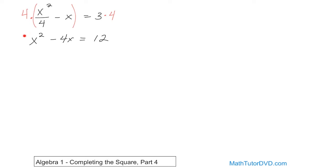Now we have a coefficient of 1 here. We check for any constant terms on the left — there are none, all constants are on the right, just the number 12. So we continue with our procedure: negative 4 divided by 2, square the result. Negative 2 squared gives us 4. So that's our magic number — we need to add 4 to the left and also 4 to the right to get a perfect square.